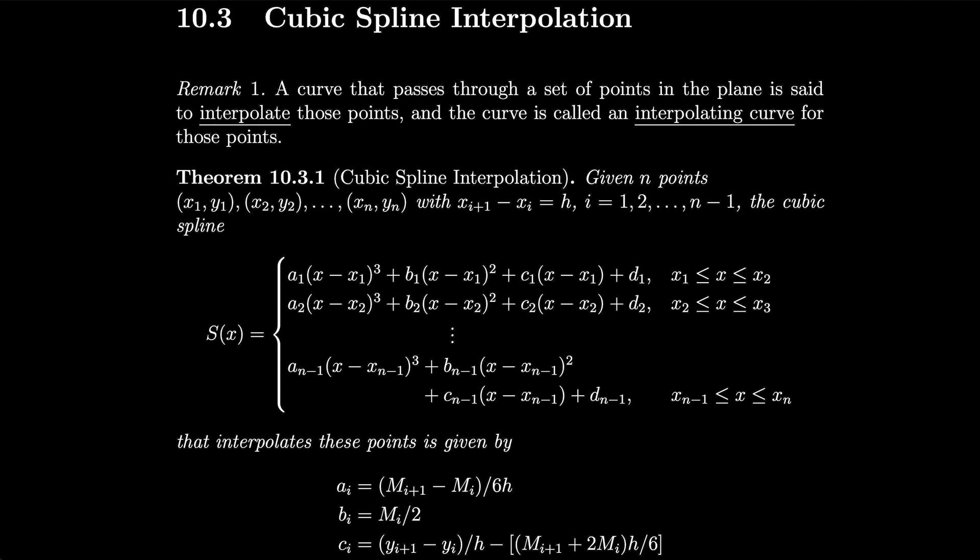Section 10.3, cubic spline interpolation. A curve that passes through a set of points in the plane is said to interpolate those points, and the curve is called an interpolating curve for those points.